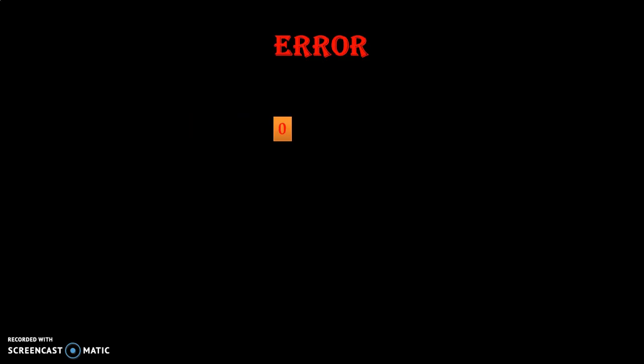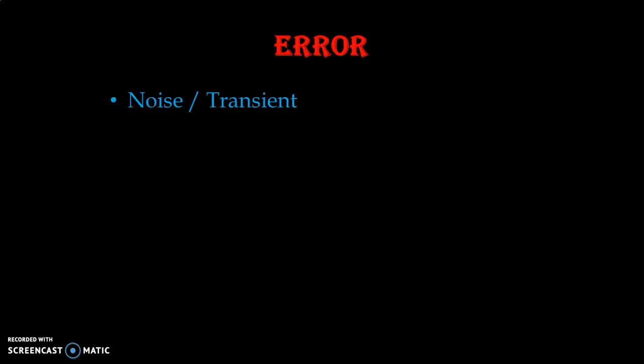During the transit of the signal, there may be an error generated. What exactly we mean by error: suppose we have information zero, then zero is converted into one. Same way, if we have one, then one is converted into zero. So the actual value might be zero or might be one, and because of error it is converted either into one or into zero. The possibility of error is because of electrical noise during transit. So first we have to detect the error, then we can correct it. Whether there is an error should be known — that is known as detection.